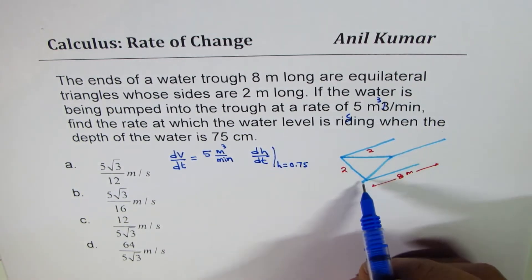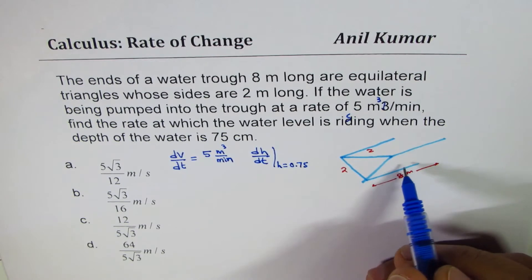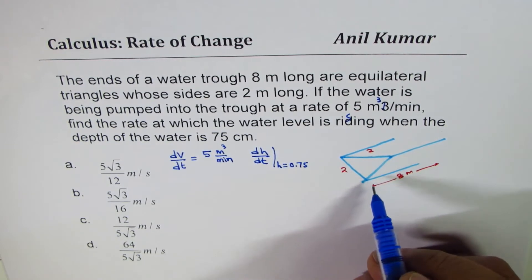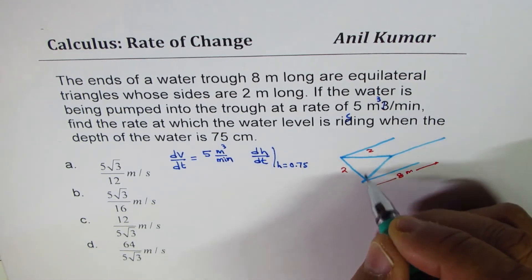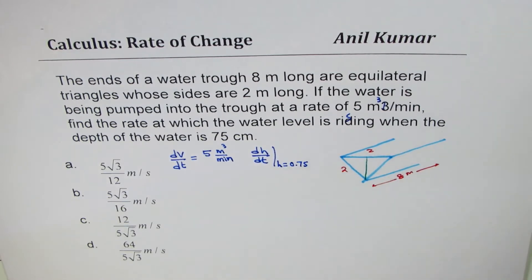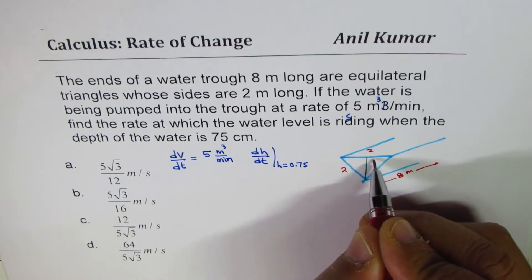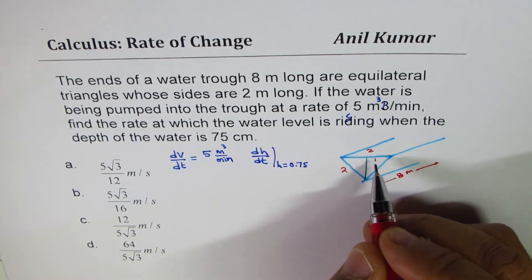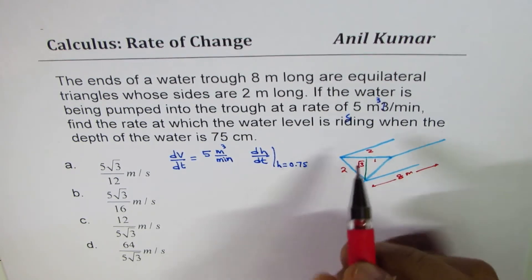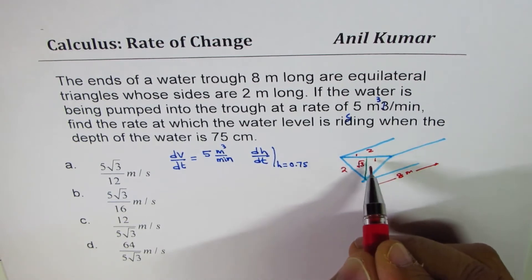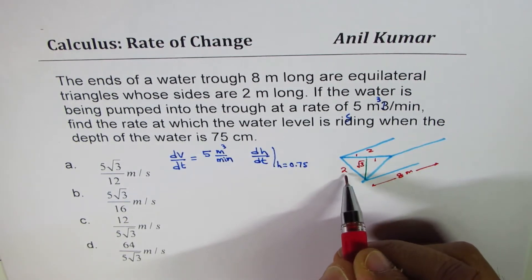The idea here is to find the area of the triangle multiplied by the length, which gives us the volume. To find the area of this equilateral triangle, we drop a perpendicular from the vertex. This perpendicular divides the triangle into a right triangle with one side 1 meter. The other side is square root of 3, from 2² minus 1², where 2 is the hypotenuse.